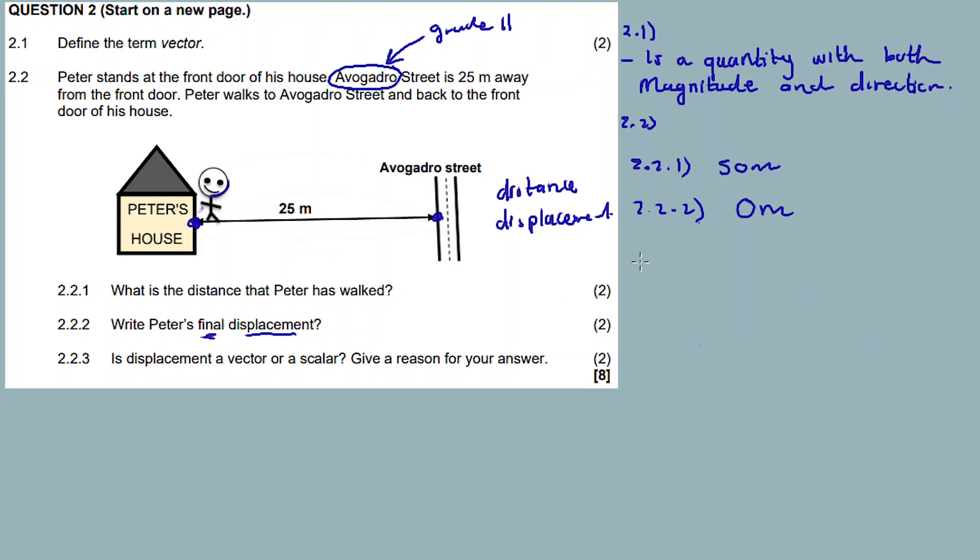2.2.3 - The last question: Is displacement a vector or a scalar quantity? Displacement is a vector. As I was explaining about distance and displacement, displacement is a vector because it has direction.